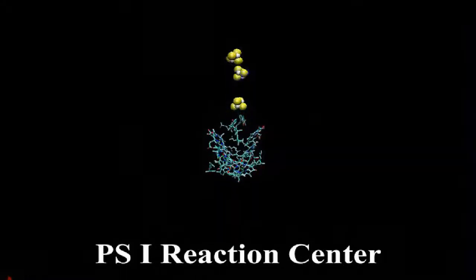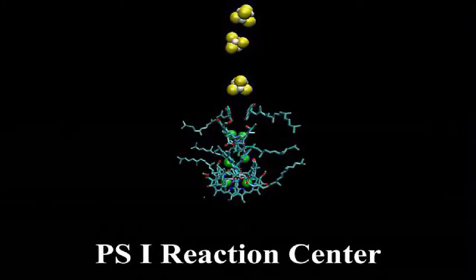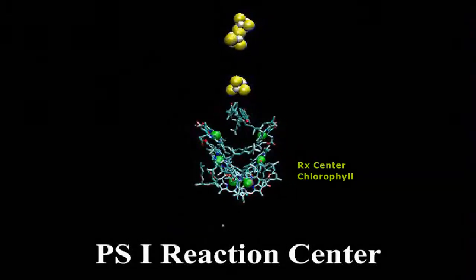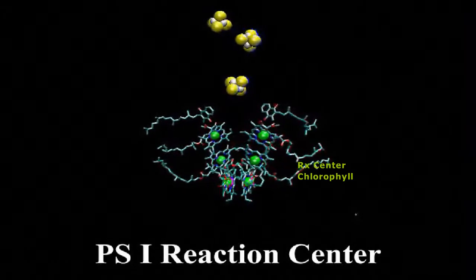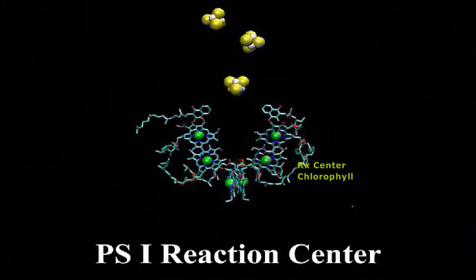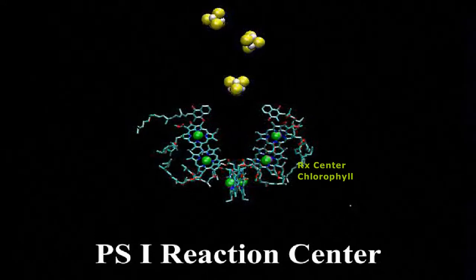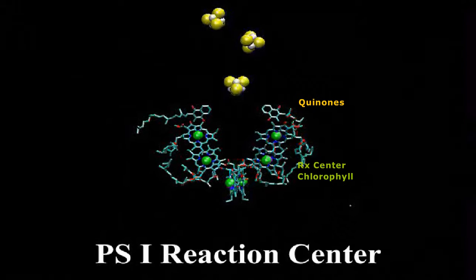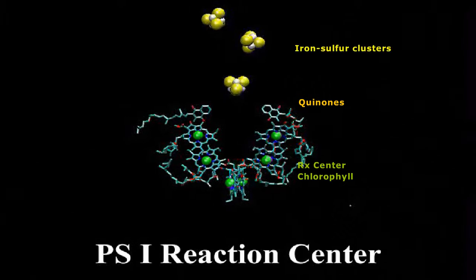The reaction center consists of a series of special chlorophyll molecules that absorb light of slightly longer wavelength than the surrounding chlorophylls. This property enables them to act as energy traps. Once the photon's energy is captured by these molecules, it cannot return to the outer antennae chlorophylls. Its only escape route is through the electron carriers, which include quinone molecules above the chlorophylls. The quinones, in turn, donate the electrons to a series of iron-sulfur complexes, shown as the yellow structures at the upper part of this image.